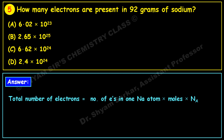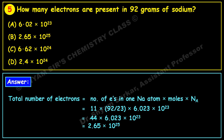Sodium has 11 electrons per atom. Moles = 92 ÷ 23 = 4 moles (atomic weight of sodium is 23). Avogadro's number = 6.023 × 10²³. Multiplying these three: 11 × 4 × 6.023 × 10²³ = 2.65 × 10²⁵ electrons. This matches option B — option B is the correct answer.